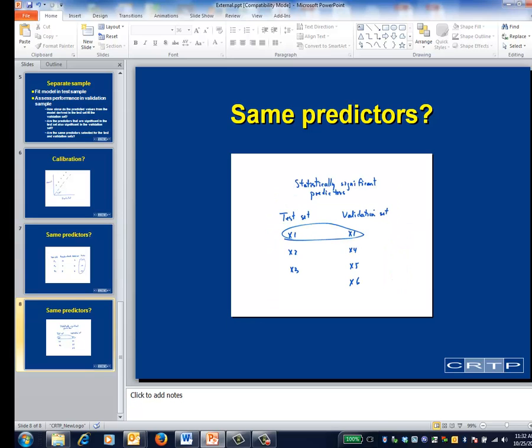If you want to know whether the same variables are the strongest predictors in both data sets, you'd perform the same variable selection procedure and compare the results as illustrated on this slide.